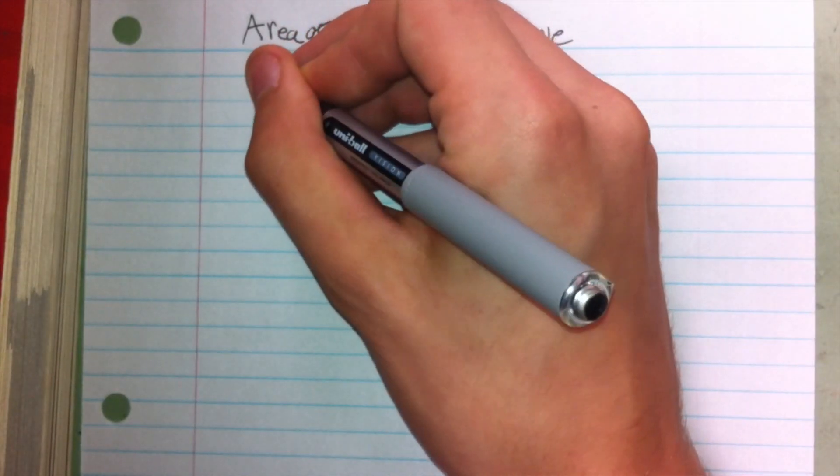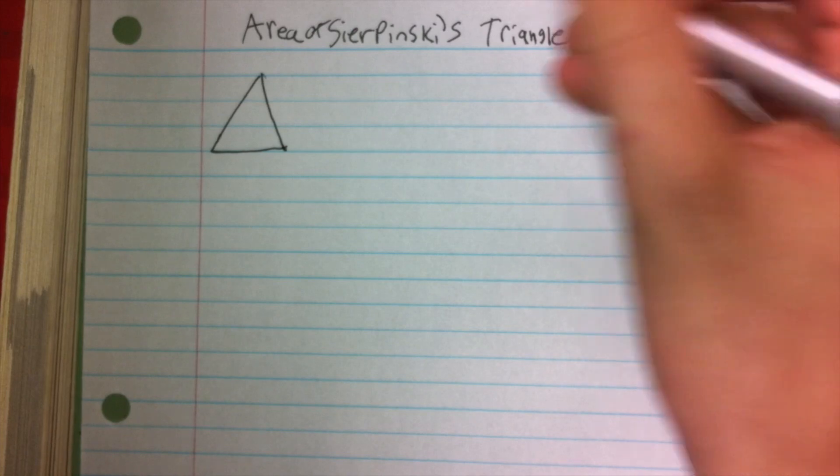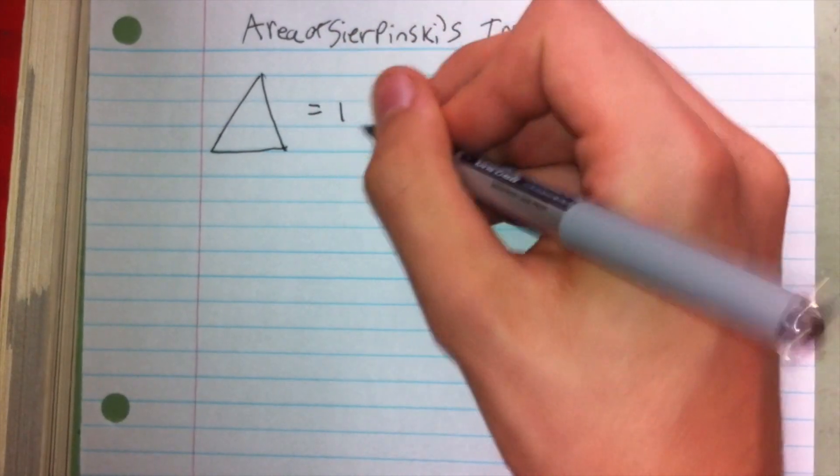The first stage of Sierpinski's Triangle is just a triangle. We're going to say that this has an area of one unit.